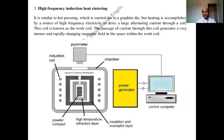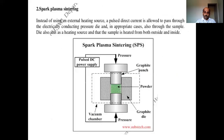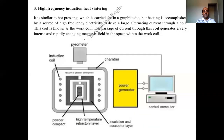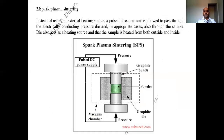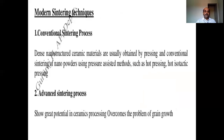So the first advanced technique is microwave sintering, the second is spark plasma sintering, and the third is high frequency induction heat sintering. These are the three most recent advanced techniques we use for sintering, covering solid state sintering, liquid state sintering, and modern sintering techniques.